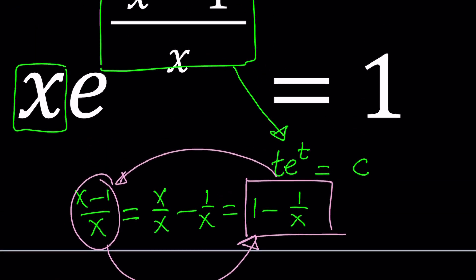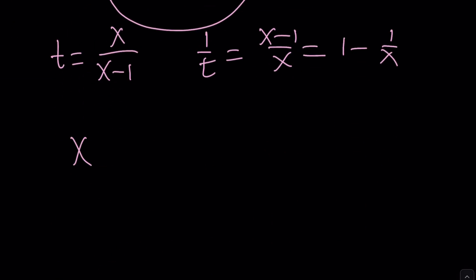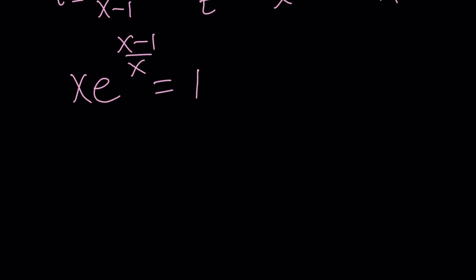So let's go ahead and take our expression and separate it into the following. This is equal to 1, right? We're going to write it now as e to the power 1 minus 1 over x, which is nice. And you'll see in a little bit why this is nice.